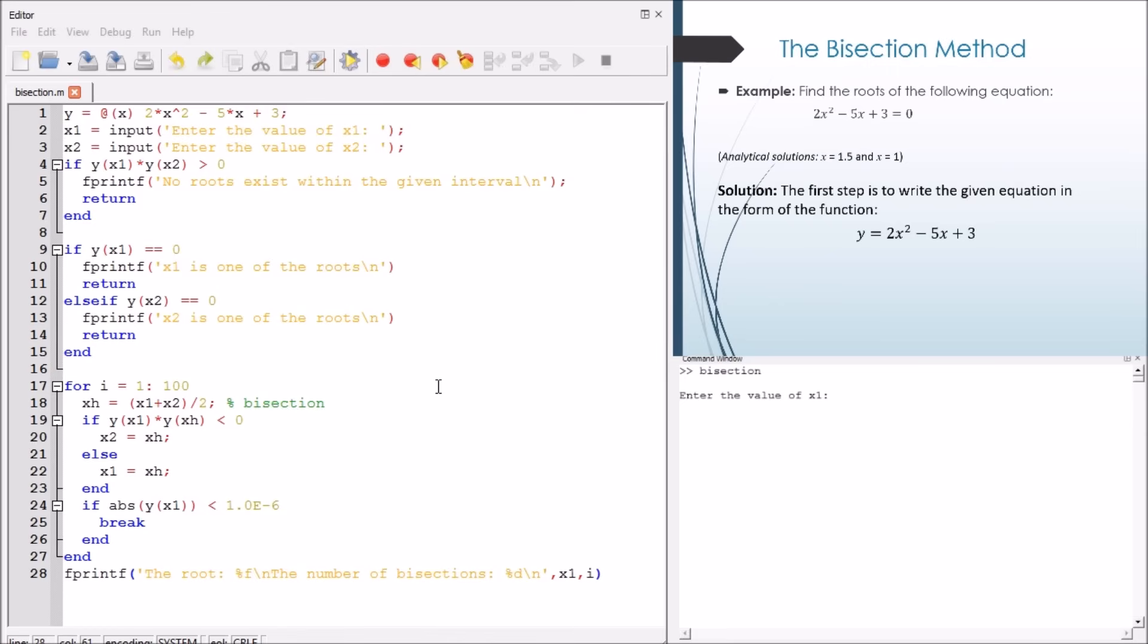So let's input two values, for example, 0.6 and 1.2. So the root is 1 and we obtained it in 19 bisections. Now let's try again and we say, for example, 1.2 and 1.9. So the root is 1.5. So in this way we can get the roots if the range embraces.